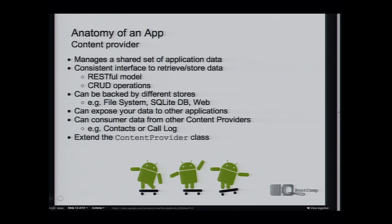The next component is the content provider. A content provider manages a shared set of application state — it's a facade on all of your data persistence. It provides a consistent interface to the Android system on how to interact with your data: querying, storing, and updating via CRUD-type operations. It's also a RESTful interface, so every unique entity has a URI and you can perform operations on those URIs. Underneath, you can back it with any kind of store — commonly a SQL-like database, or the file system or web.